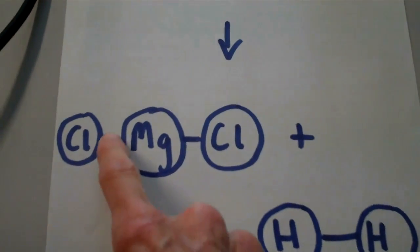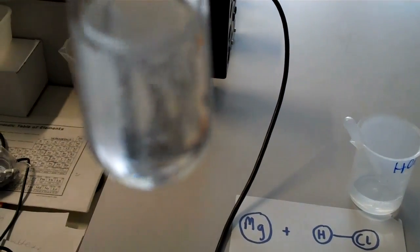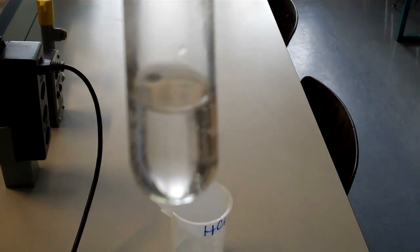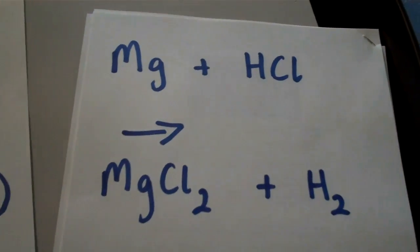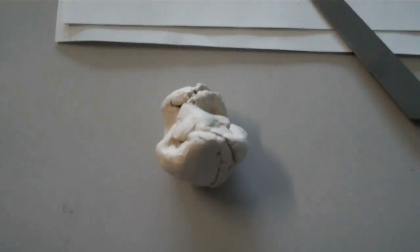Formation of the new bonds actually produces energy, so if you felt the test tube it would feel quite warm. This is an example of an exothermic reaction. As you can see, pretty much all the magnesium has disappeared — there's a tiny bit left — but it actually hasn't disappeared; the product, magnesium chloride, is now dissolved in water.